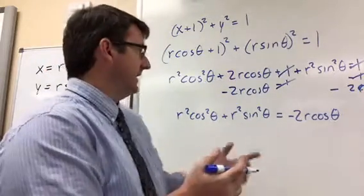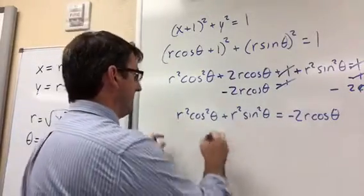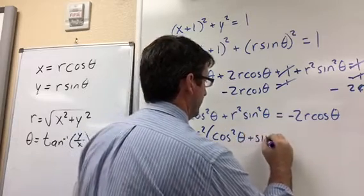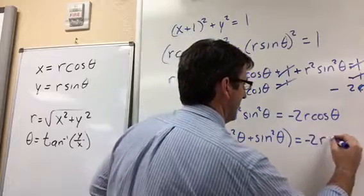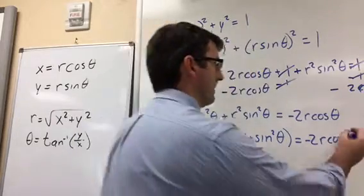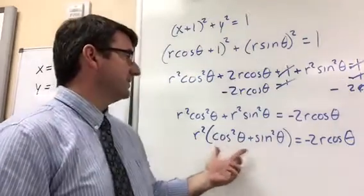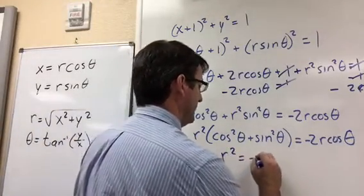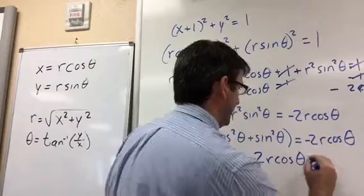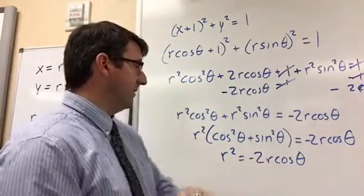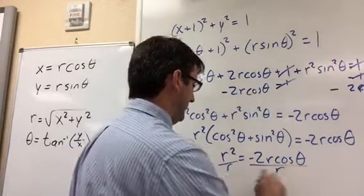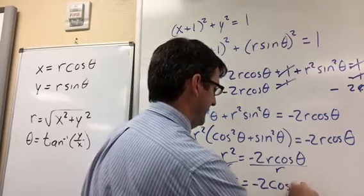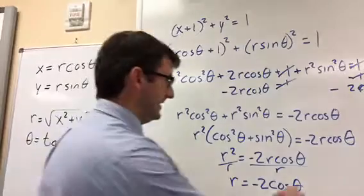Notice we have cos²θ + sin²θ, so we can factor out an r² and use the Pythagorean identity: cos²θ + sin²θ = 1. That gives us r² = -2r cosθ. Dividing both sides by r, we're left with r = -2 cosθ, and that's our answer in polar form.